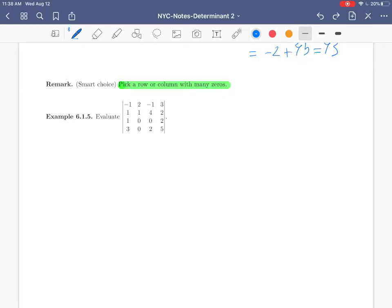Let's look at example 6.1.5. In this example, we want to evaluate the determinant of a 4x4 matrix. So we have to decide which row or column is good to be chosen to calculate the determinant. Here I would like to choose the second column as there are two zeros in this column. Of course, you can choose the third row as well.